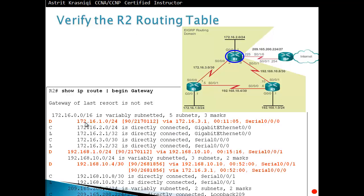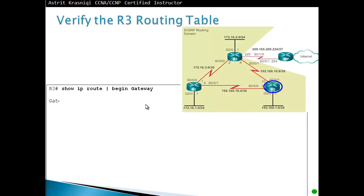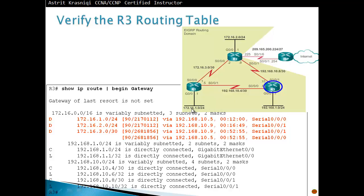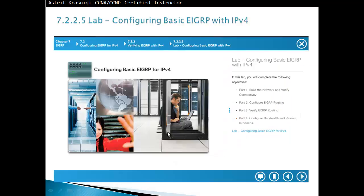Network 192.168.10.8 is load-balanced, with two routing table entries — via 192.168.10.6 and via 172.16.3.2. On Router 2's routing table, we can see 172.16.1.0 learned from 172.16.3.1, the LAN of Router 3 at 192.168.1.0, and load balancing on 192.168.10.4. Router 3 knows the LAN of Router 1 (172.16.1.0), the LAN of Router 2 (172.16.2.0), and the serial link 172.16.3.0/30. We'll now configure lab 7.2.25 — Configuring Basic EIGRP with IPv4. Thank you for watching.